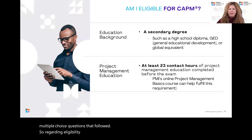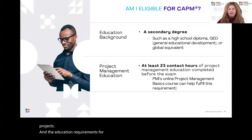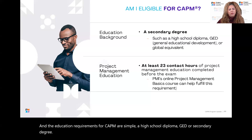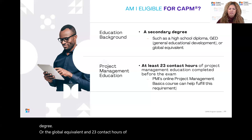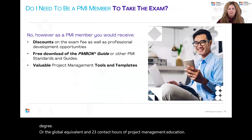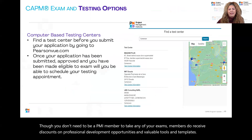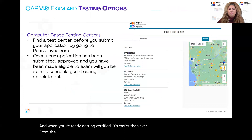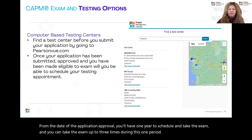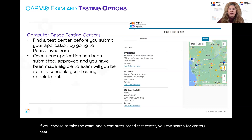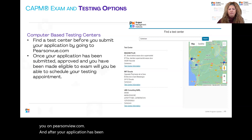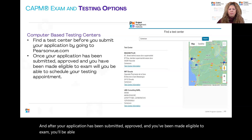Regarding eligibility for CAPM, it doesn't require any experience working in projects. The education requirements are simple: a high school diploma, GED, or secondary degree — or the global equivalent — and 23 contact hours of project management education. Though you don't need to be a PMI member to take any of our exams, members do receive discounts on professional development opportunities and valuable tools and templates. Getting certified is easier than ever: from the date of application approval, you have one year to schedule and take the exam, and you can take it up to three times during that period. If you choose a computer-based test center, you can search for centers on pearsonvue.com.